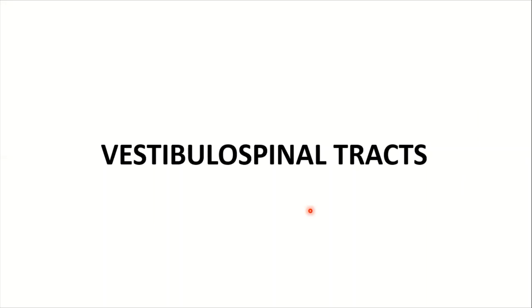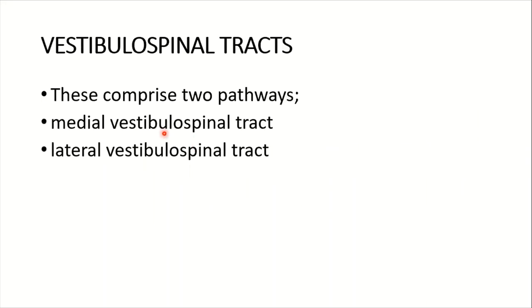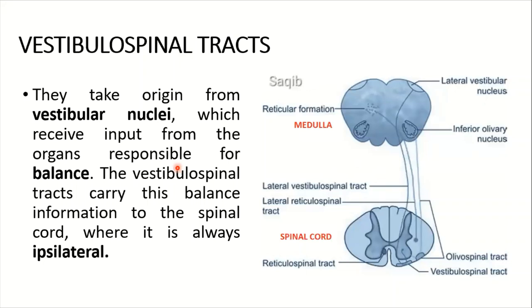First are the vestibulospinal tracts, which comprise two pathways: the medial vestibulospinal tract and the lateral vestibulospinal tract. They take their origin from the vestibular nuclei lying in the medulla, which receive input from the organs responsible for balance — the vestibular system. The vestibulospinal tracts carry this balance information to the spinal cord, always ipsilaterally.